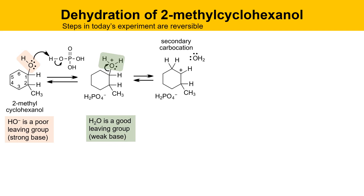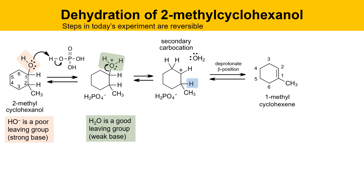The leaving group leaves, generating a secondary carbocation. This secondary carbocation has two distinct beta positions. Deprotonating one beta position gives an alkene product with a double bond between the 1 and 2 carbons — 1-methyl cyclohexene. Deprotonating the other beta positions gives a compound with a double bond between the 1 and 2 carbons of that structure, named 3-methyl cyclohexene. Alkene naming details will be covered in a lecture video.